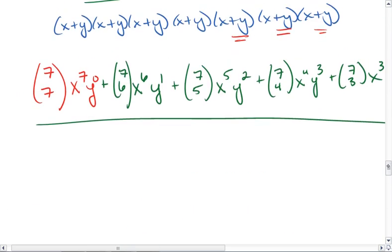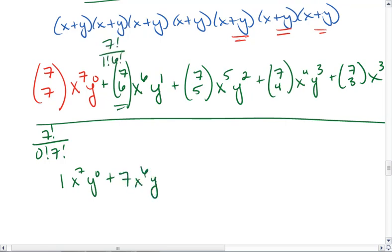I can go through and do that for each of these coefficients. I can do 7 factorial over 0 factorial 7 factorial, which is just 1. I could do for this one 7 factorial over 1 factorial 6 factorial, which is 7. And this pattern can continue. You can go ahead and do this on your own if you want. I'm just going to go ahead and fill in the numbers.